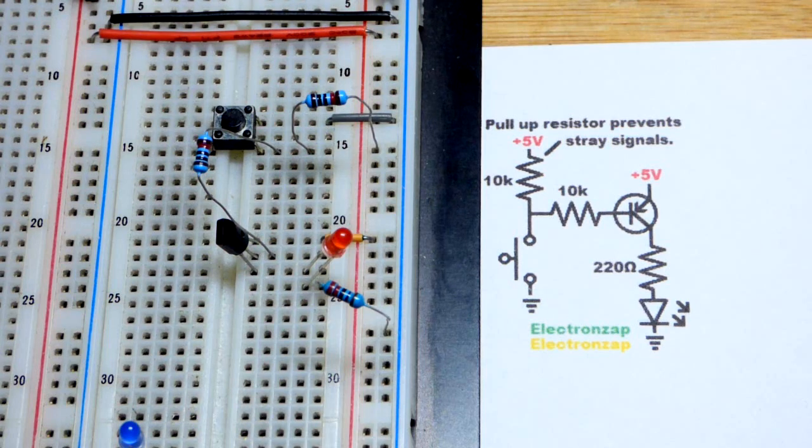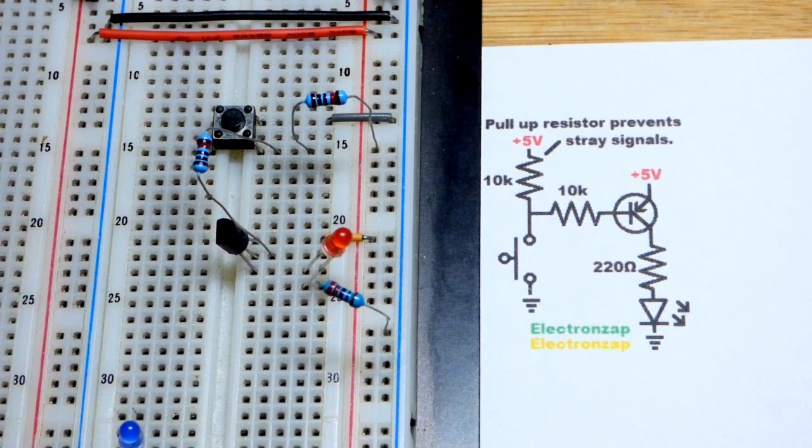Those are topics for other videos. Hopefully this one made sense when you're working with a PNP bipolar junction transistor and you need a pull-up resistor.